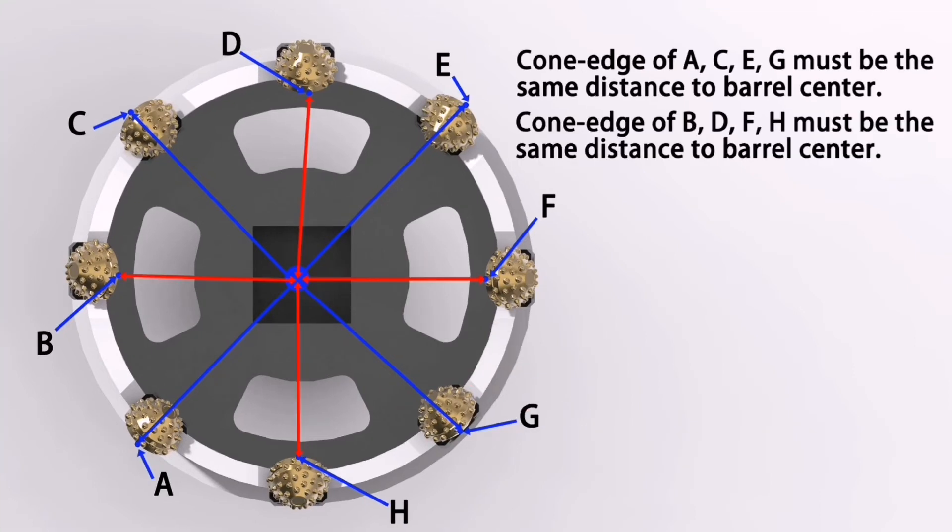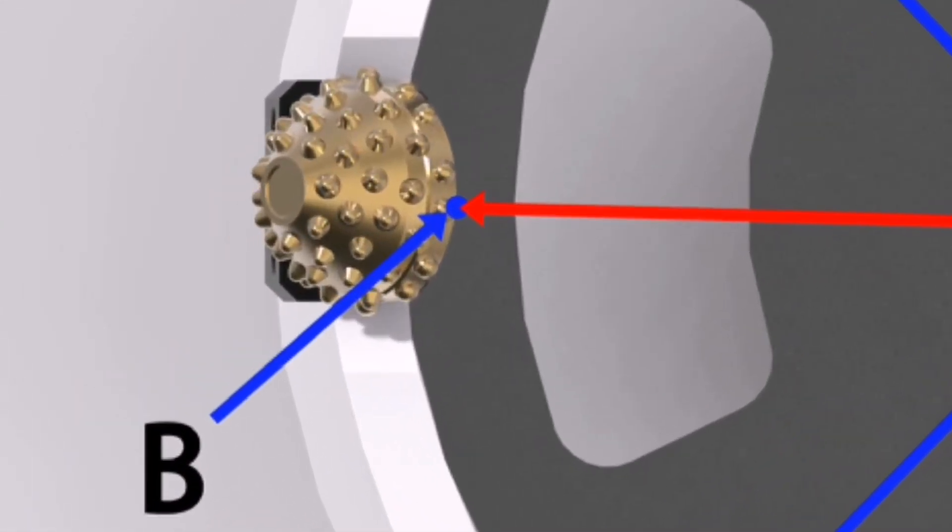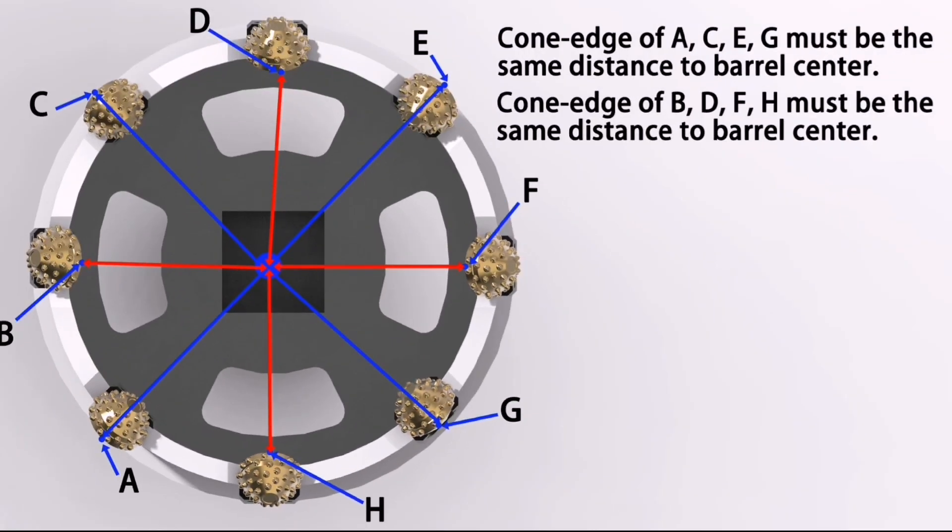And at the same time, cone edge or inner roller cone beads, B, D, F, H, must be the same distance to barrel center.